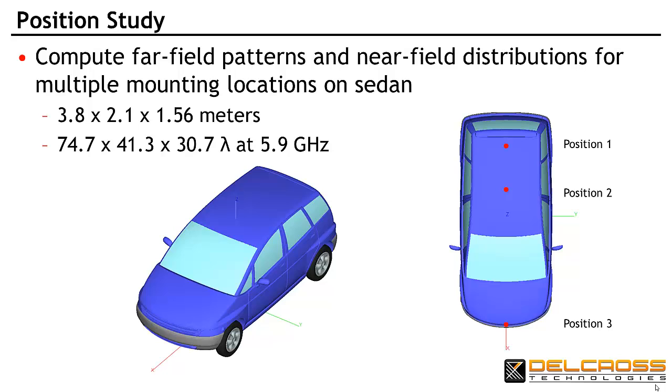Savant predicts the installed radiation pattern quickly and efficiently. Note that at 5.9 GHz, our vehicle is about 75 by 41 wavelengths in size and nearly 31 wavelengths high. This would be a very large and long problem to analyze using traditional full-wave EM analysis software tools and would probably require exotic hardware. Savant solves problems like this efficiently on typical desktop computing systems.